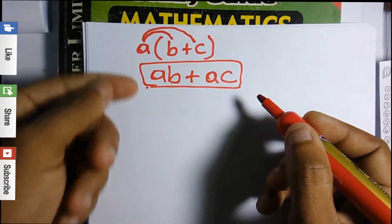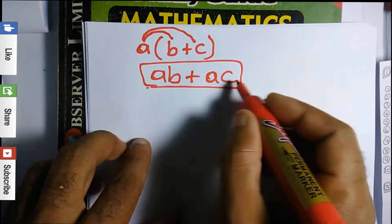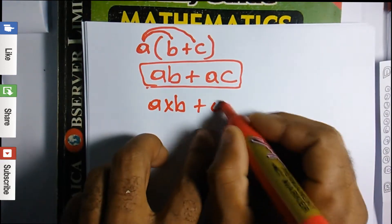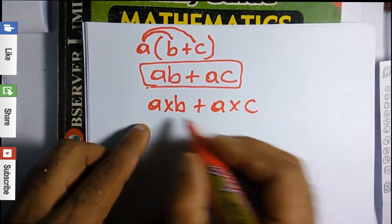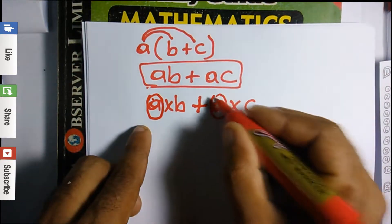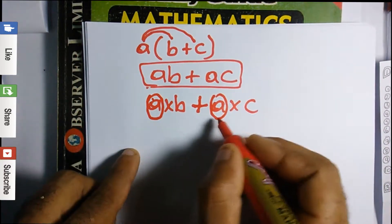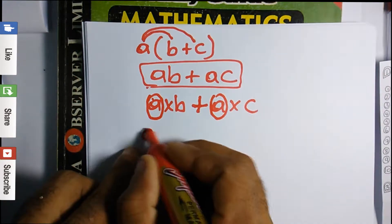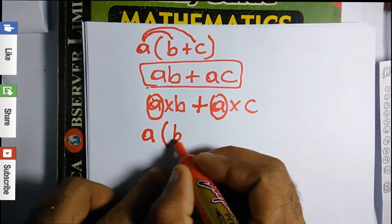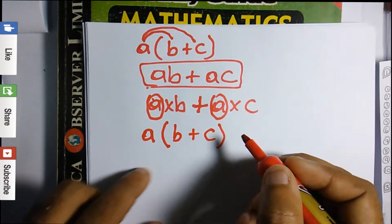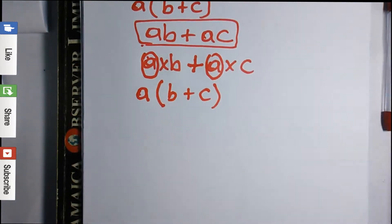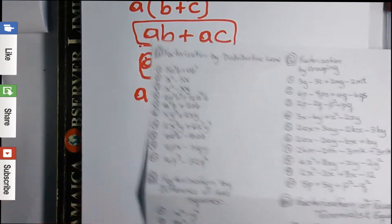Now factorizing ab + ac by distributive law: rewrite ab as a times b, and ac as a times c. Then look on both sides of the plus sign to see what is common — there's an a on both sides. Factor out a, open a bracket, and write what's left on both sides: b + c. So the answer is a(b + c).